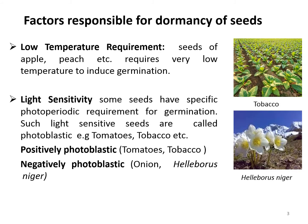Low temperature is another factor. Seeds of apple and peaches require very low temperature to induce germination. In nature, this requirement is fulfilled by the winter season — these seeds remain dormant throughout winter and germinate only in the following spring. Another factor is light sensitivity. Some seeds have a specific photoreceptor requirement for germination. Such light-sensitive seeds are called photoblastic, and these could be positively photoblastic or negatively photoblastic.